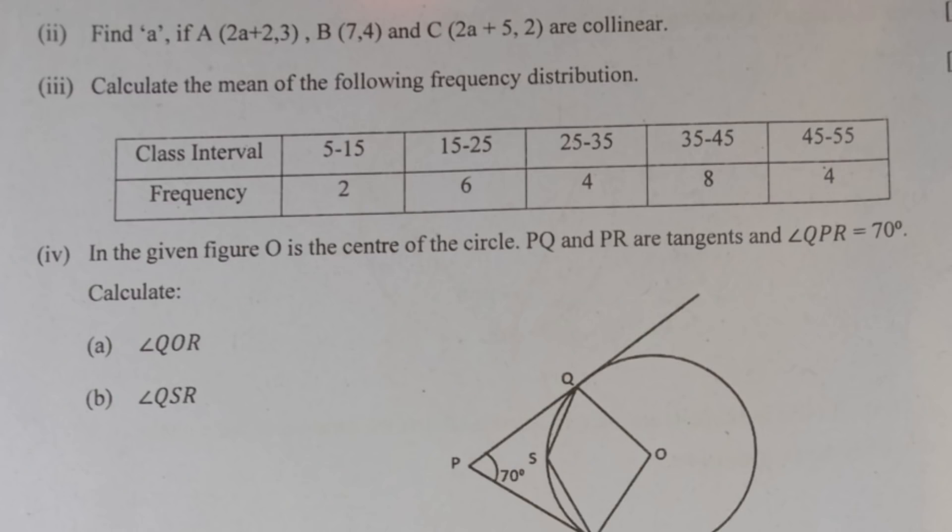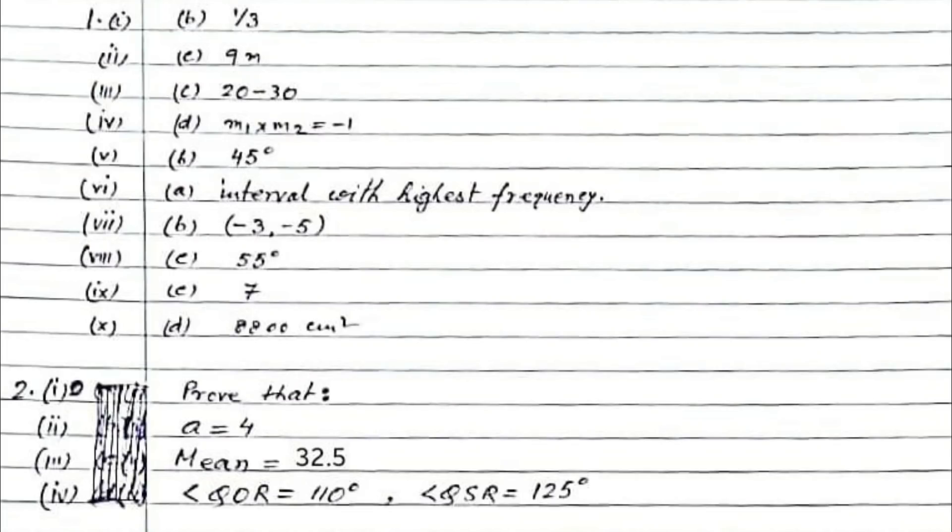The first question is a prove that question. I am giving the solutions because if you were to sit and work out the entire thing, it will take much longer. I thought we will give you the solution so that you can match and know how many you have got right. I hope you have got 40 on 40. Question 2: A equals 4 is the correct answer.